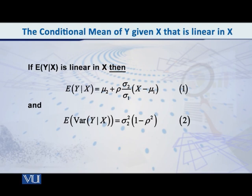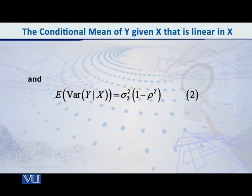If E(Y|X) is linear in X, then it is given by μ₂ plus ρσ₂/σ₁ multiplied by (x - μ₁). This is one result. And there is another result which is very interesting. As you can now see on the screen, we have another result, and that is: